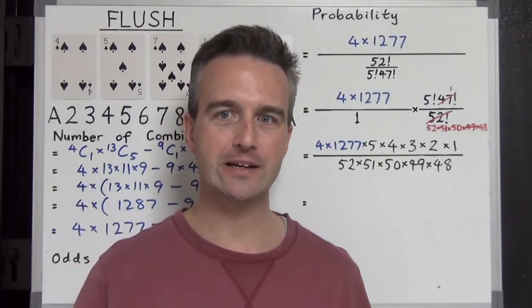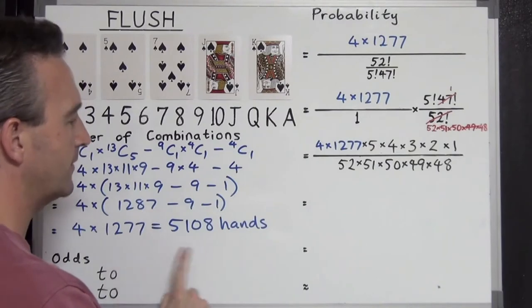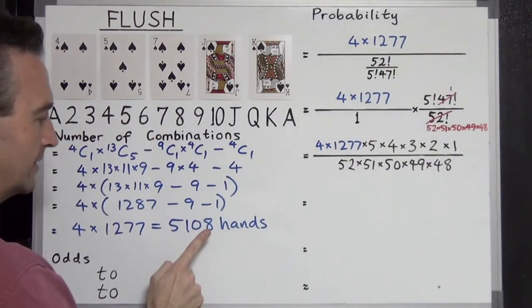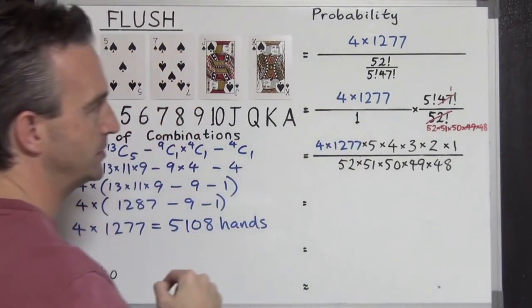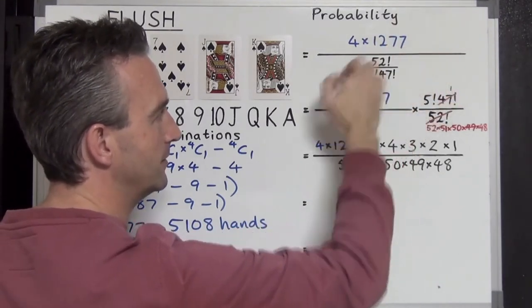Let's take a look at the probability and odds of getting a flush now. So total number of hands, 5,108. We're going to put this on top. But instead of writing it like that, I'm going to write it in this factored form: 4 times 1,277. Probability is going to be that divided by 52C5, which has been put into its format here.